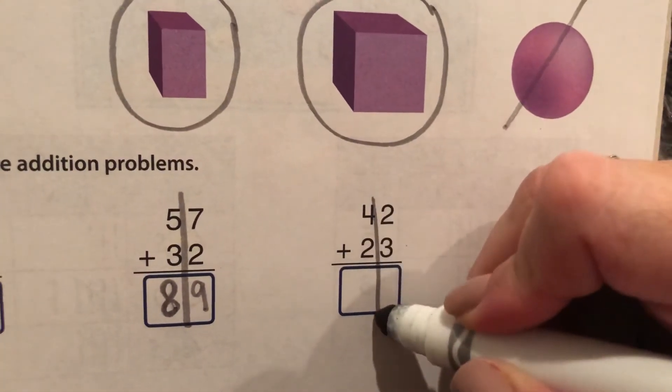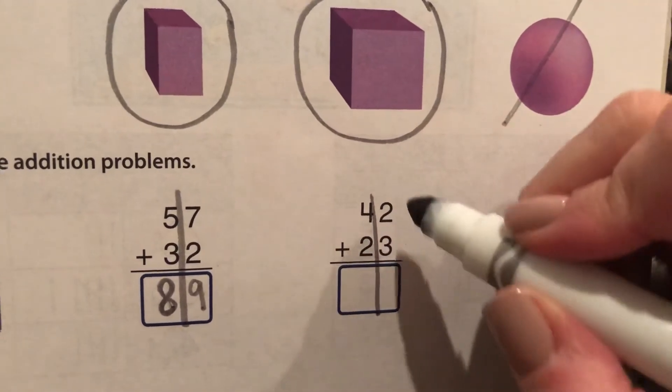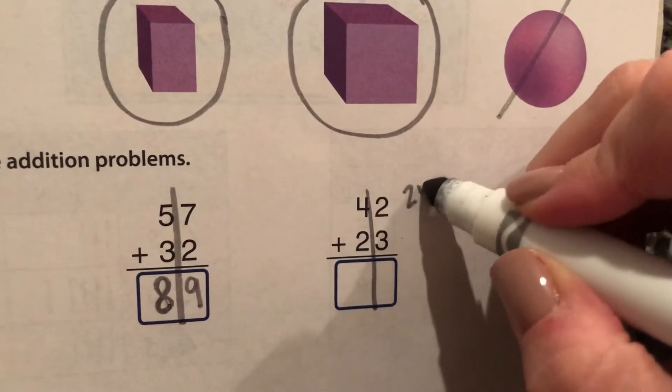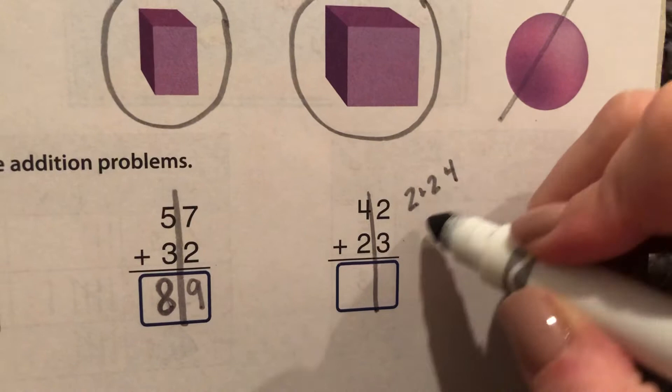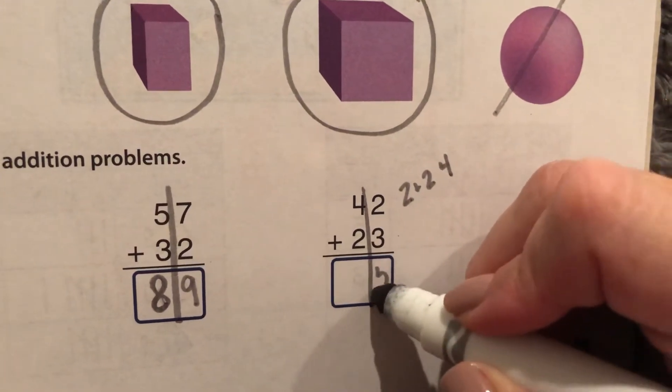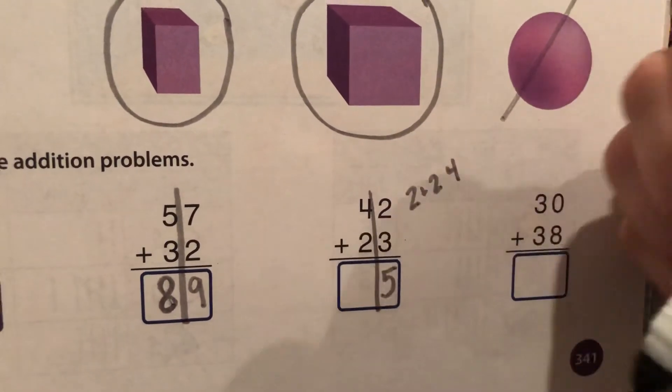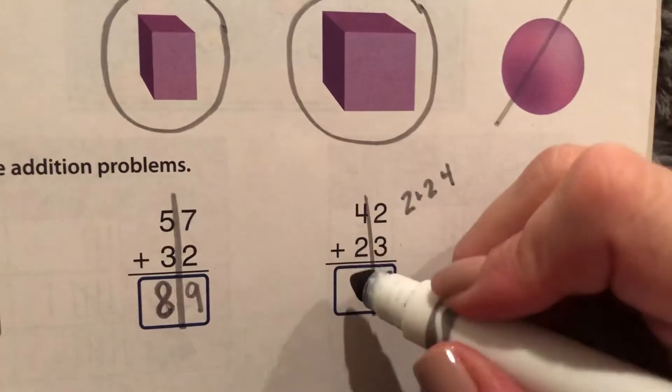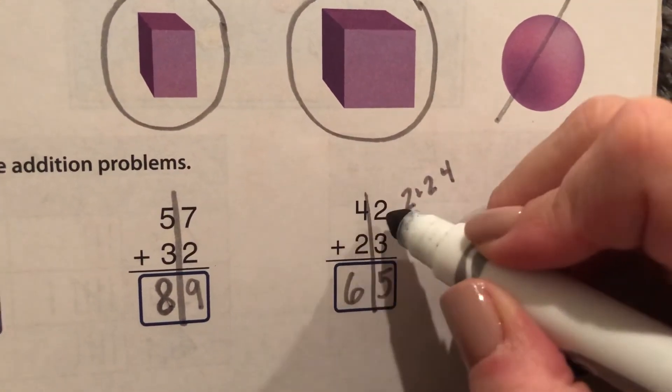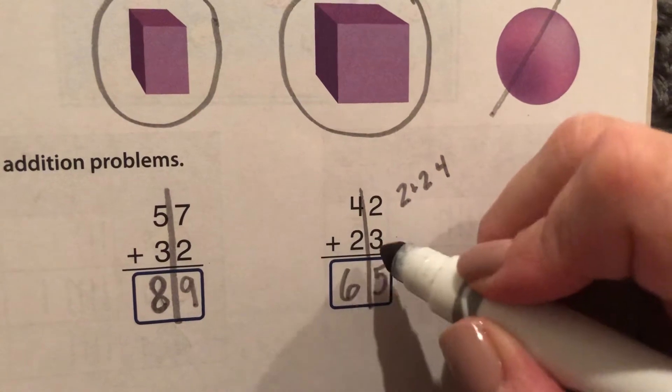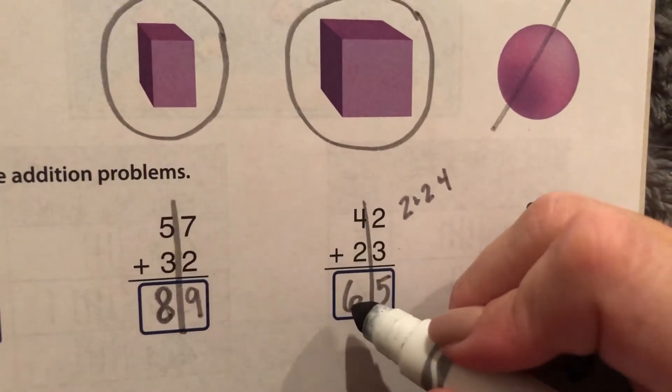Two plus three more. Well, two plus two is four, so one more would be five. Four, five, six. So 42 plus 23 equals 65.